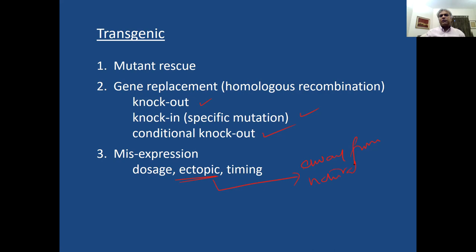Natural location means if a gene is expressed only and only in the wings, I'm expressing it in wings, in eyes, or vice versa, if a gene is expressed only in the eyes and I'm expressing it in the wings, that is ectopic expression.